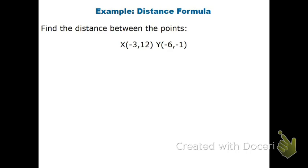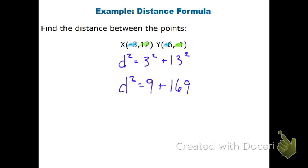Same thing with this one. The distance squared equals: the change in x's — to get from negative 3 to negative 6, that's a difference of 3. To get from 12 to negative 1, that's a difference of 13. So d squared equals 9 plus 169, which gives me 178. Taking the square root of both sides, the distance equals 13.34.